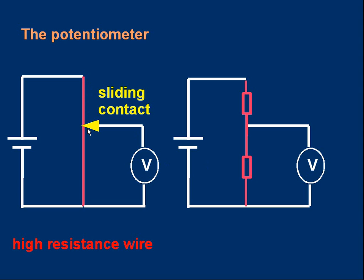So if that's a short length of wire, it's a small resistance. If this is a long length of wire, it's a big resistance.